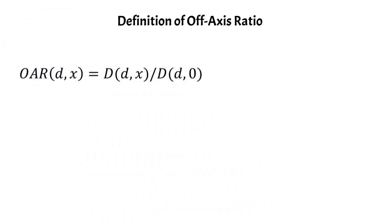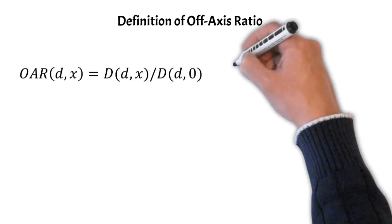So this is the definition listed here. You can see it's a function of the depth and the off-axis distance x, and it's just a ratio of doses. One of the doses is taken at depth d and off-axis distance x, and it's normalized to the dose at depth d at an off-axis distance of 0, or the central axis.